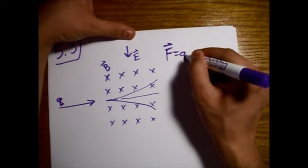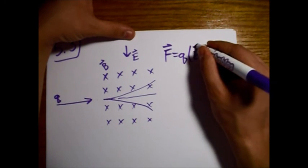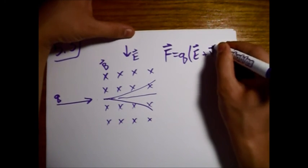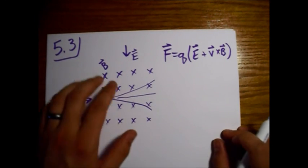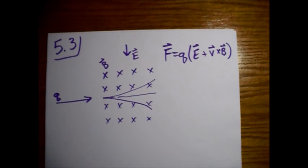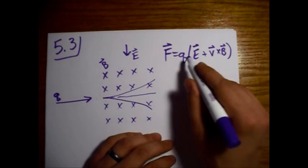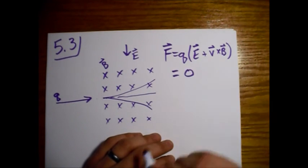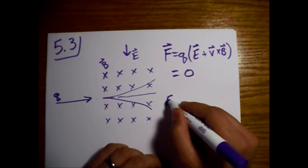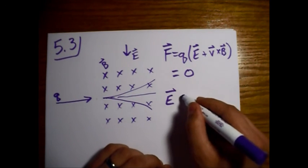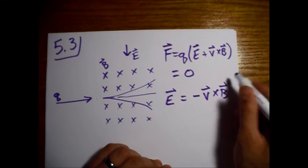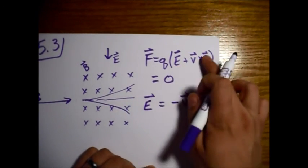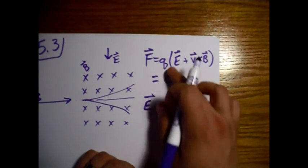We have Q times the quantity E plus V cross B. If there's no deflection — so if these two forces are balanced completely, as in part A of this problem — then this is equal to zero. So we can say that E is equal to minus V cross B, since Q is not zero.